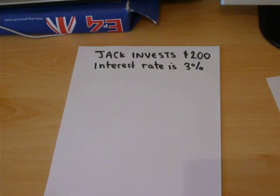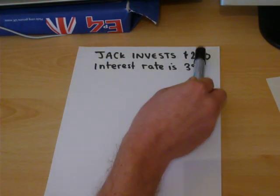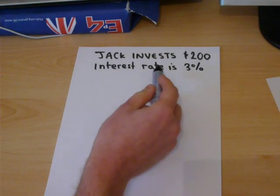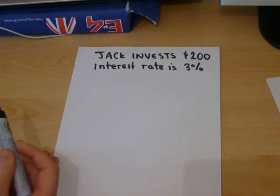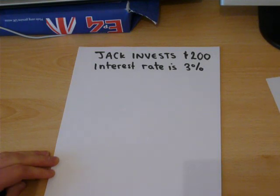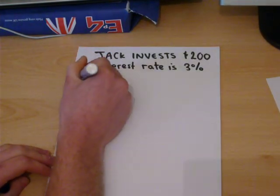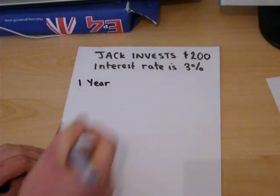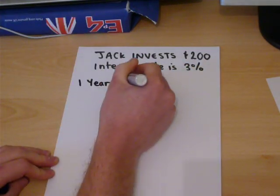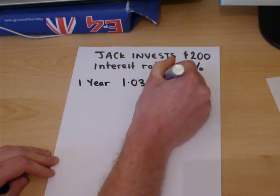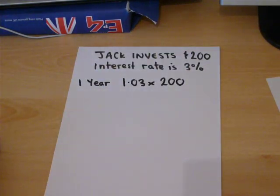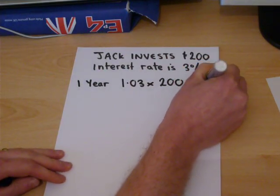In part 1, we got to a point where Jack was investing £200 with an interest rate of 3%. This means that every year, the amount in his account will increase by 3%. So, for example, after 1 year, if we add on 3% to 100%, we can do 1.03 — that's 103% — times by 200, which can be done on a calculator, to get £206.